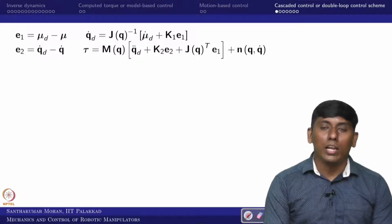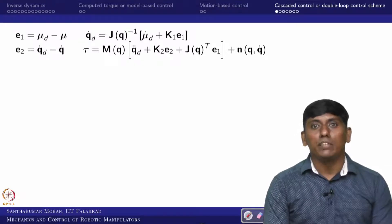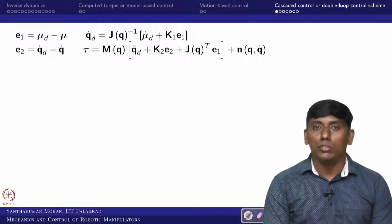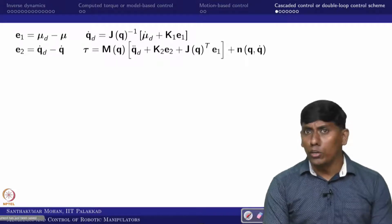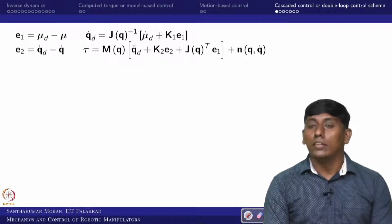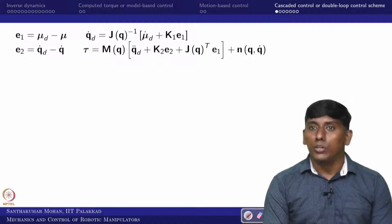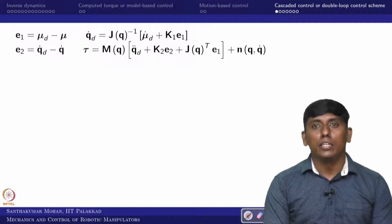Based on that, we derived tau, the control law. The control scheme is: inertia matrix multiplied with q_double_dot_desired plus k2*E2, plus J_transpose*E1 to ensure stability, and N(q, q_dot) is added for feedback linearization. The same thing we are trying to implement in MATLAB.